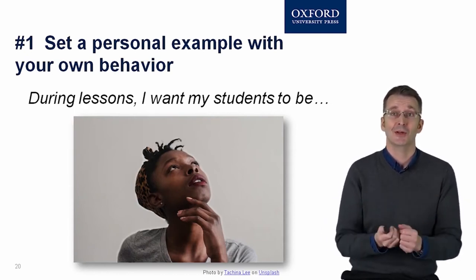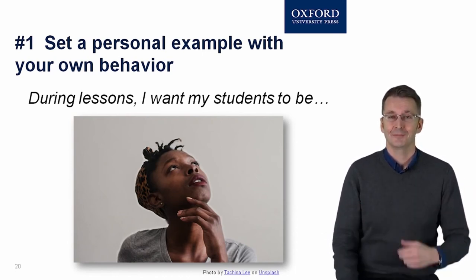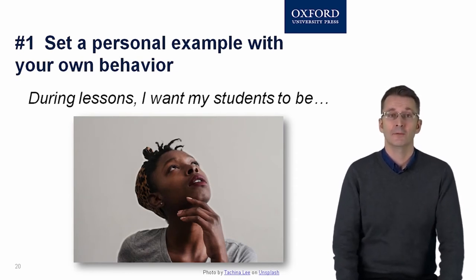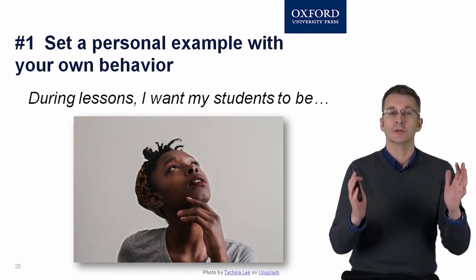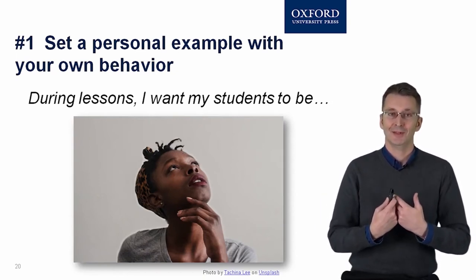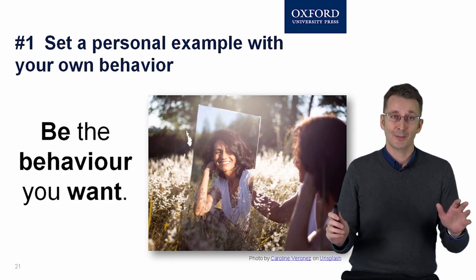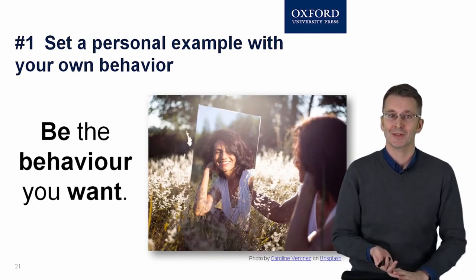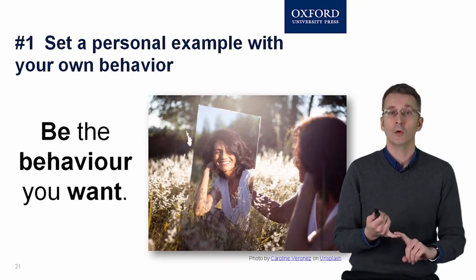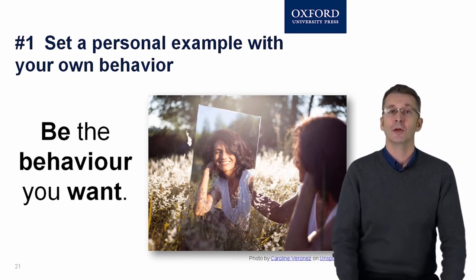Think about what you want your students to be like and how you want them to behave. Next step: take all those words which describe your ideal student and apply them to you. That's how you need to behave in the classroom — you are the example to your students. I tend not to like slogans, but I'm going to use one now: be the behavior you want. If you want your students to show curiosity, you have to show curiosity first, as a role model. If you want your students to be well organized, you have to be well organized and your students will see that. Be the behavior you want from your students.